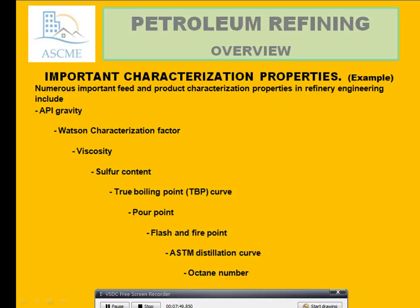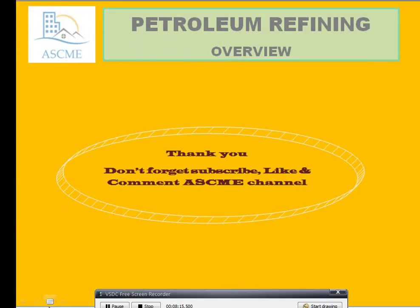The numerous important feed and product characterization properties in refinery engineering include API gravity, characterization factor, viscosity, sulfur content, true boiling point, dew point, pour point, cloud and fire point, ASTM distillation, and octane number.